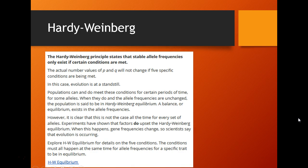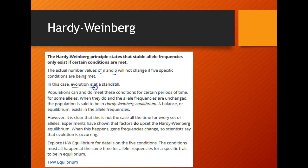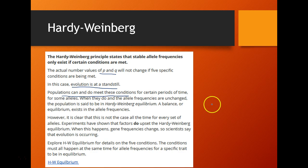In a Hardy-Weinberg population, the actual values of p and q will never change if the five conditions are met, meaning the population is not changing. If the population isn't changing and allele frequencies aren't changing, evolution is at a standstill — no change over time in allele frequencies. This is called Hardy-Weinberg equilibrium: a balance in allele frequencies where there is no change.